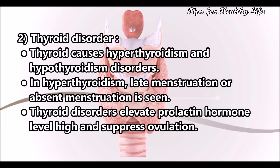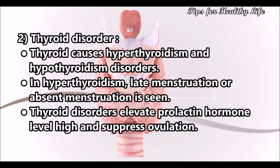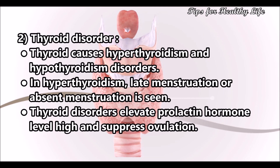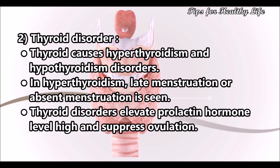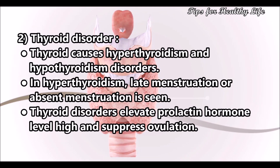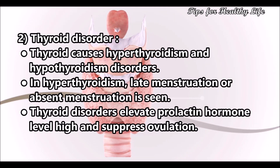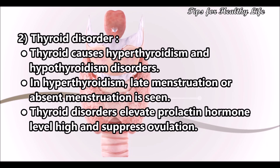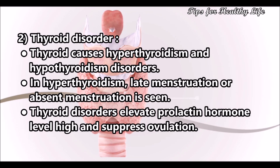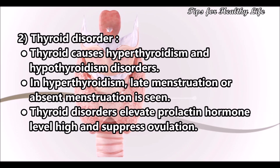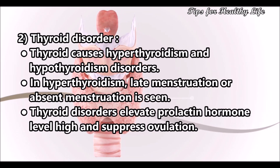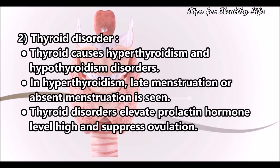In hyperthyroidism, late menstruation or absent menstruation is seen. Thyroid disorders elevate prolactin hormone levels and suppress ovulation.